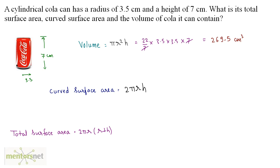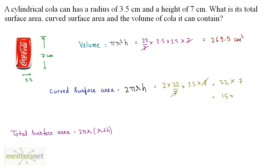Let us calculate the curved surface area now. That is 2πrh = 2 × 22/7 × 3.5 × 7. The 7 in the denominator cancels with h = 7, leaving 2 × 22 × 3.5. Now 3.5 × 2 = 7, so this becomes 22 × 7 = 154. So the curved surface area is 154 square centimeters.